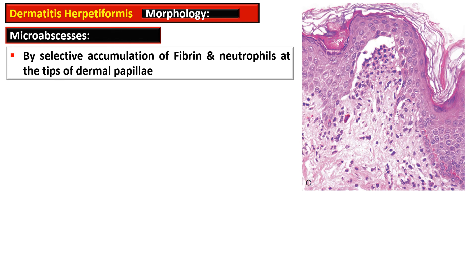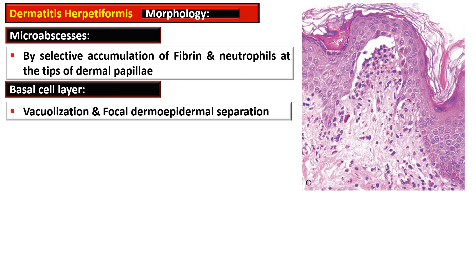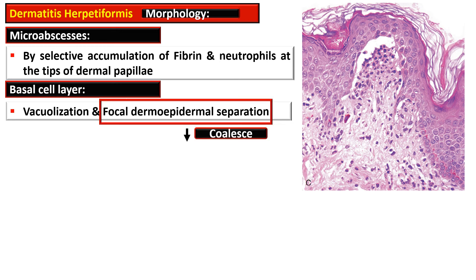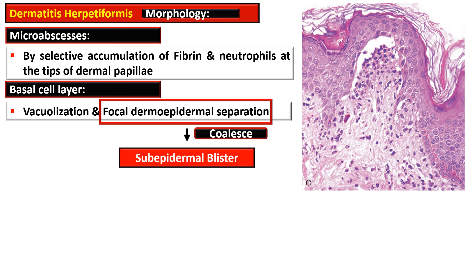These events lead to formation of micro-abscesses, formed by the accumulation of fibrin and neutrophils selectively accumulated at the tip of the dermal papillae. The basal layer shows vacuolization and there is focal dermoepidermal separation. When these areas of dermoepidermal separation coalesce, they form a subepidermal blister.